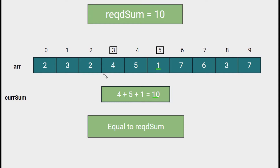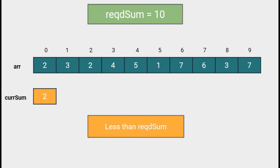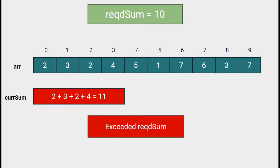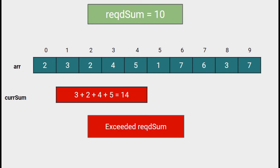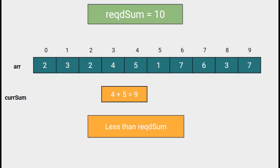This is the subarray that we have found. We print the starting index and ending index of that subarray and return 1 since we have found the array. What we are doing is: add numbers one by one from the beginning as long as the sum is less than the required sum. If it exceeds, remove elements from the beginning until the sum is less than the required sum. We continue doing this until we find a matching sum.